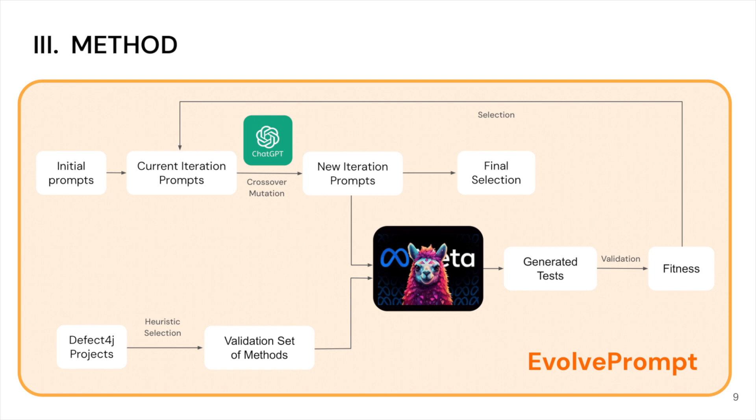let's dive deeper into our prompt evolution process, which is based on the genetic algorithm. We start with a set of initial prompts. In each iteration, we generate new prompts through crossover and mutation. For each new prompt, we calculate its fitness by evaluating the unit test generated using the prompt.